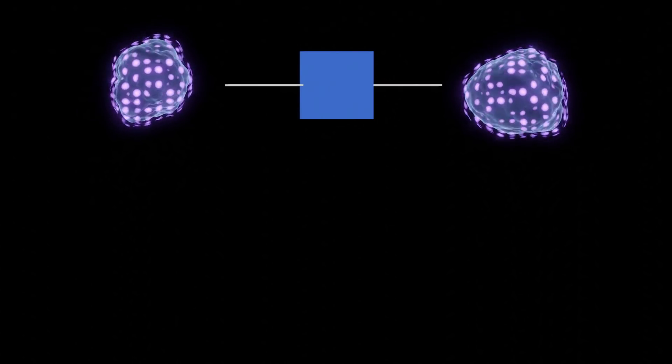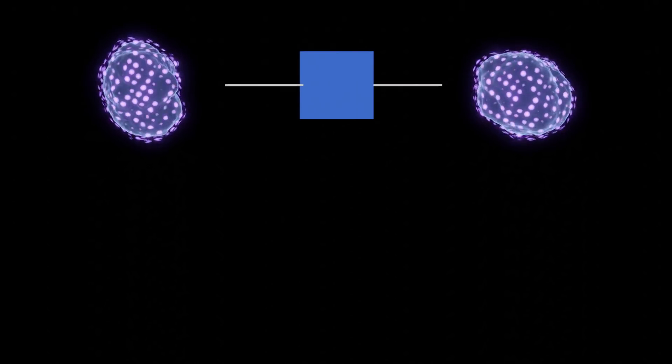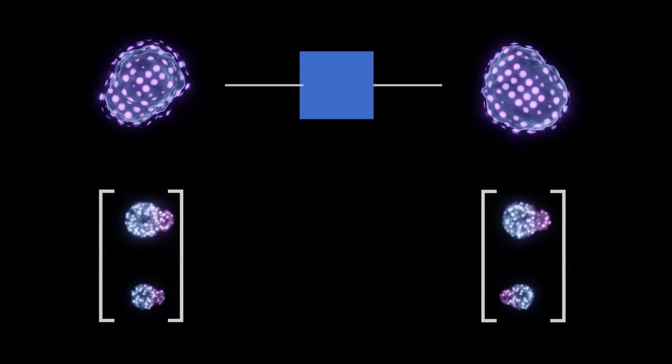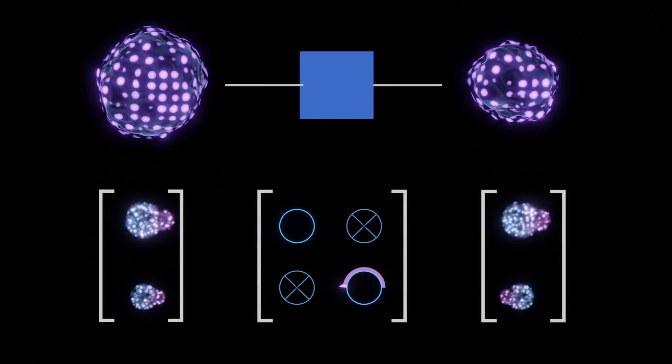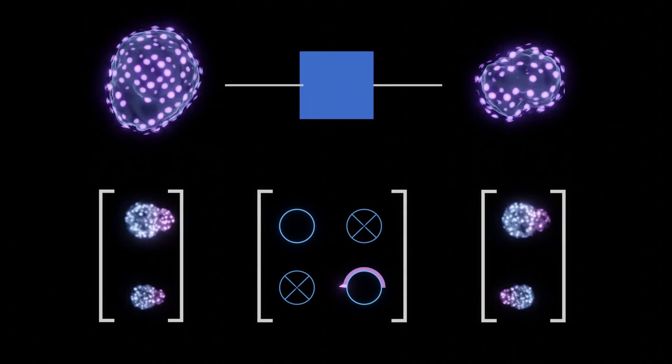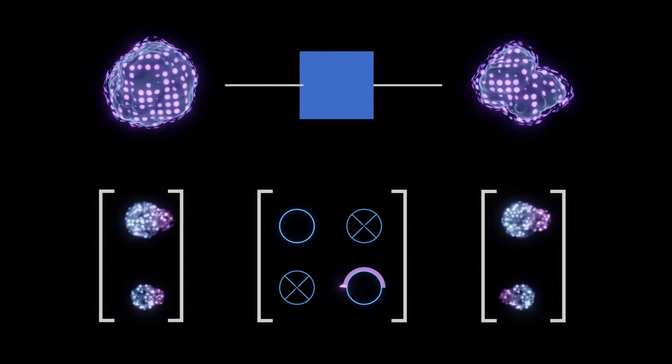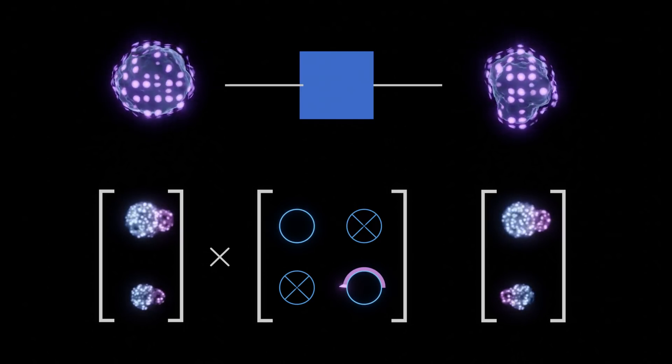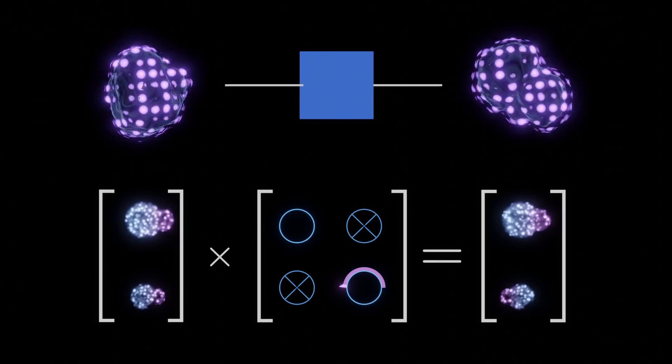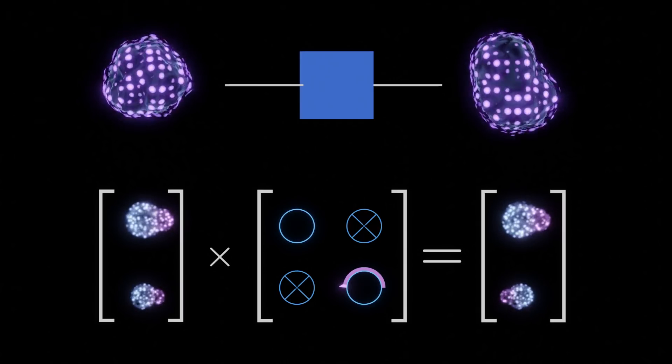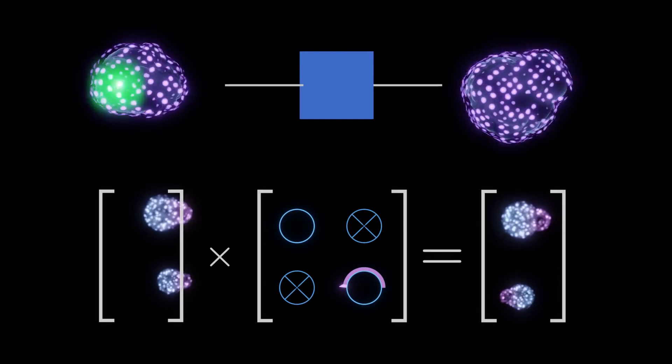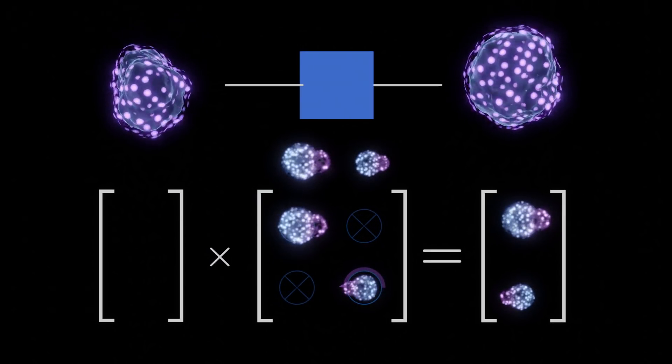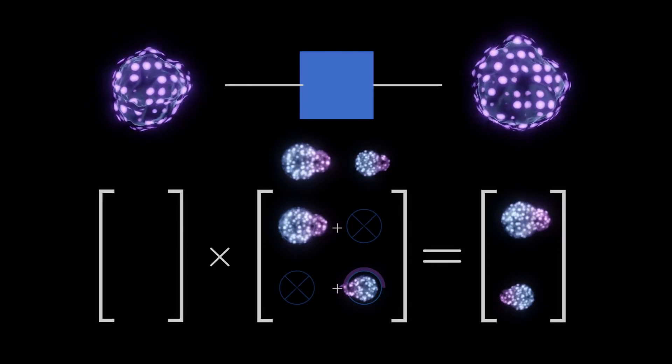Quantum logic gates are circuits that act on one or more qubits, working to modify its state vector in some way. As it turns out, almost all quantum logic gates can be effectively described using matrices. Just like with state vectors, the elements of these matrices are complex numbers. The action of applying a logic gate to a quantum system is mathematically described as multiplying the state vector of the system by the matrix of the logic gate. Recall that matrix multiplication is a shorthand for multiplying the components of a vector by each column of the matrix, followed by adding the results to produce a new vector.